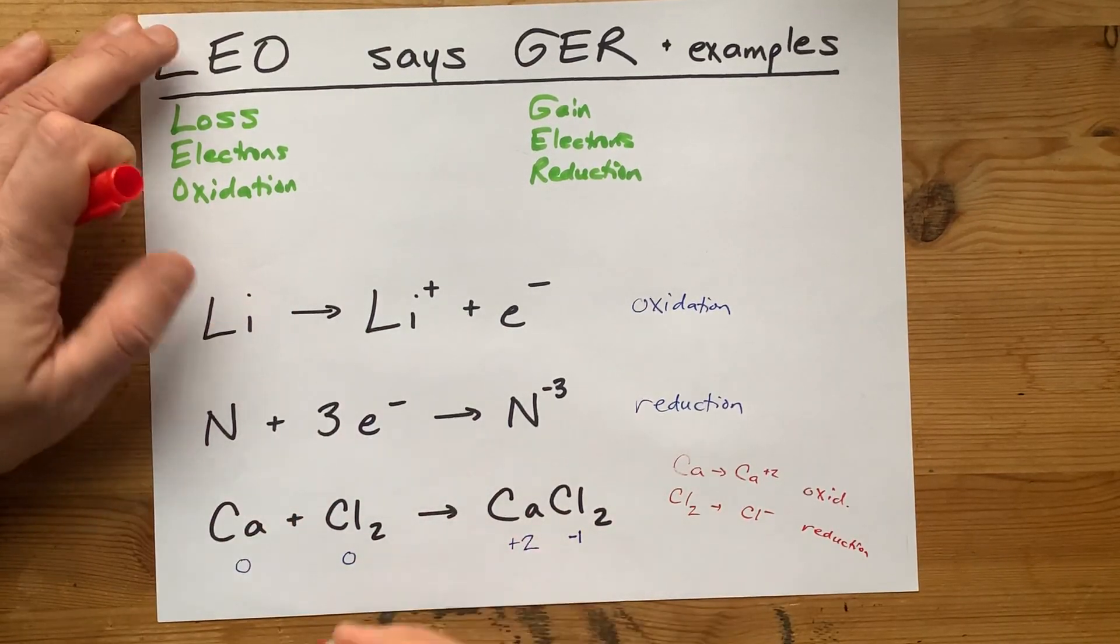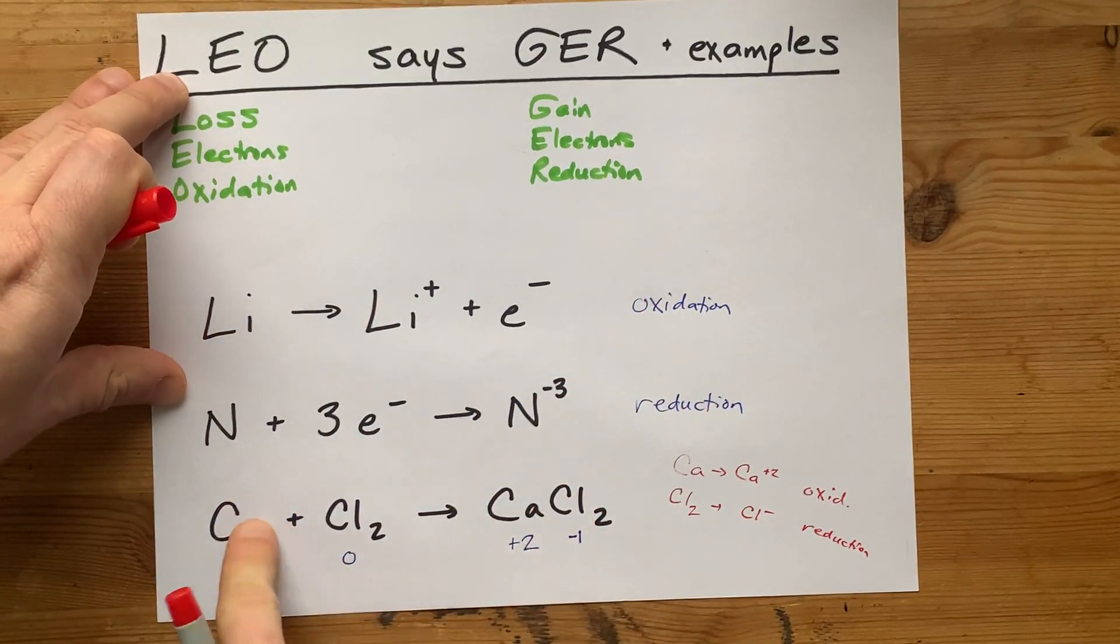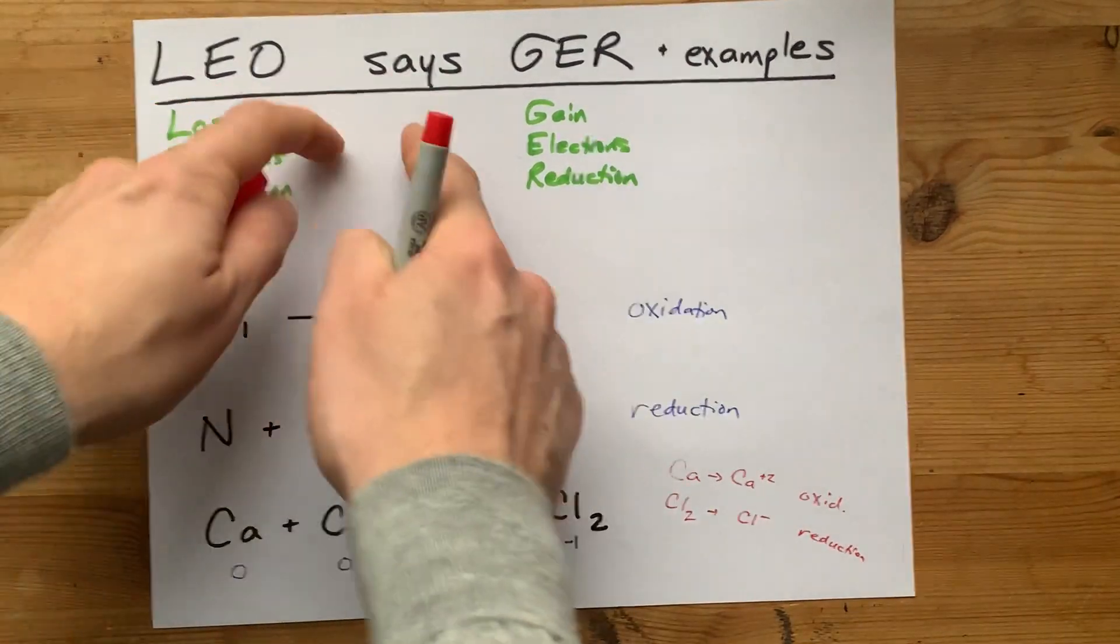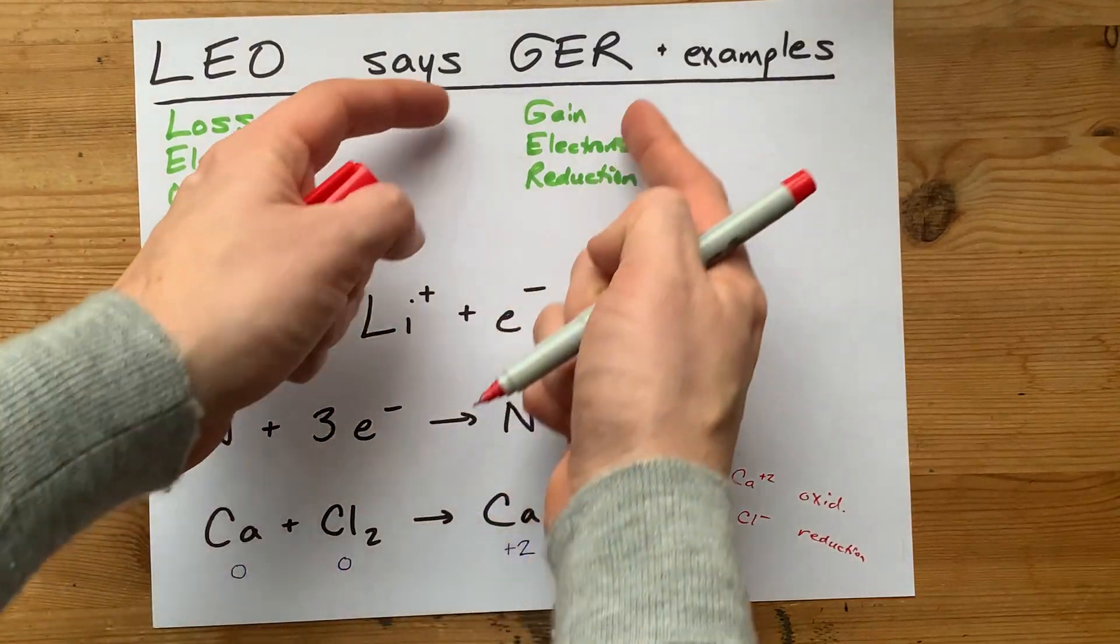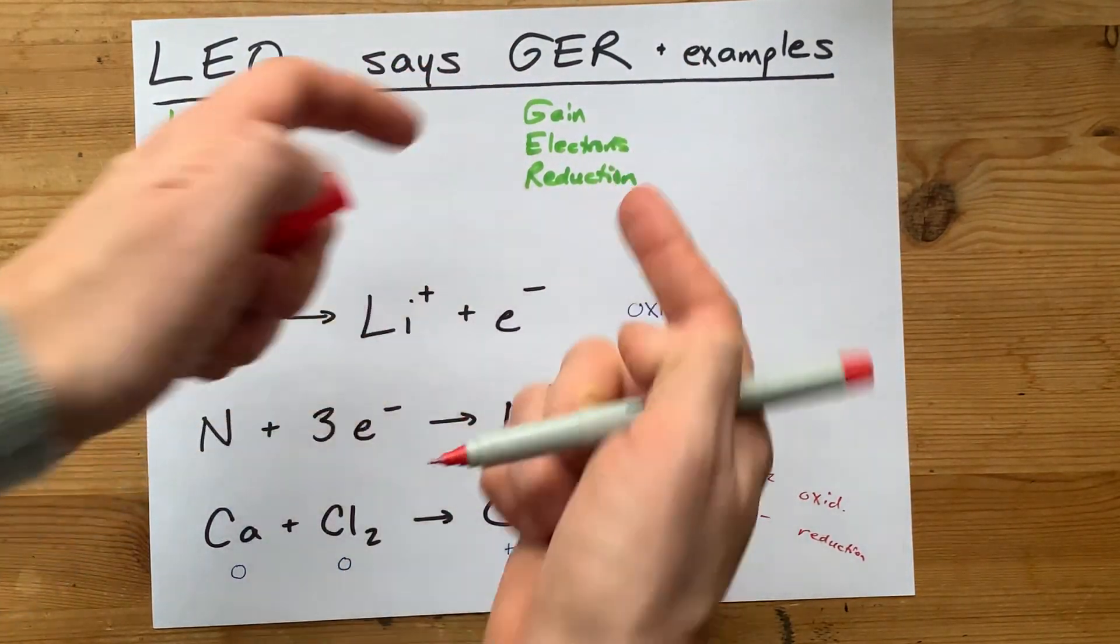Together, this makes what we call a redox reaction, because one thing's getting reduced, and the other is getting oxidized. But you're here for the mnemonic. Leo says grr, loss of electrons is oxidation. Grr. Gaining electrons is reduction.